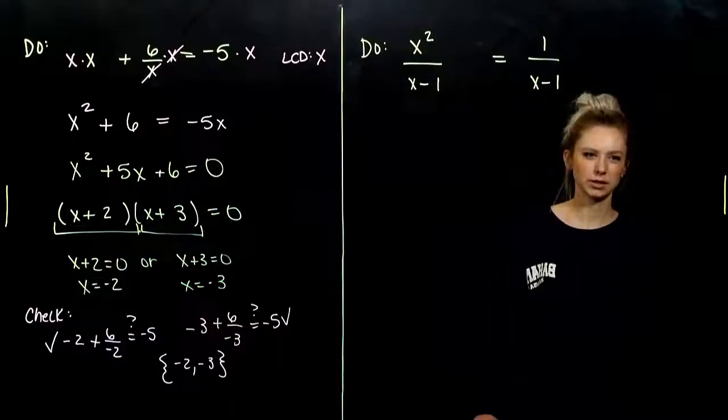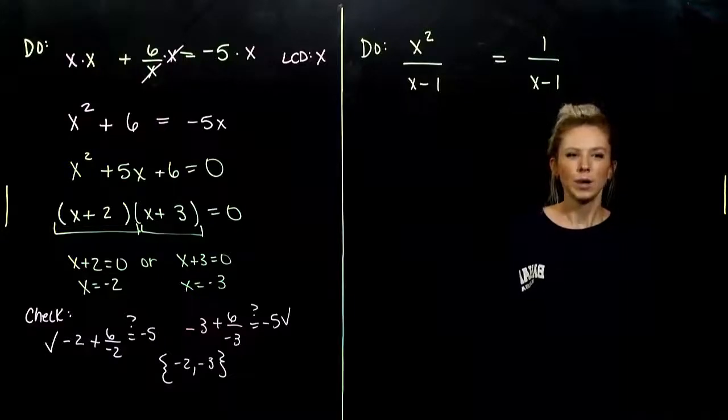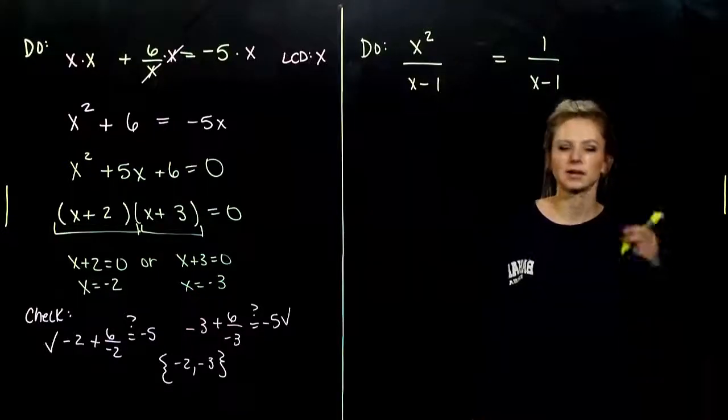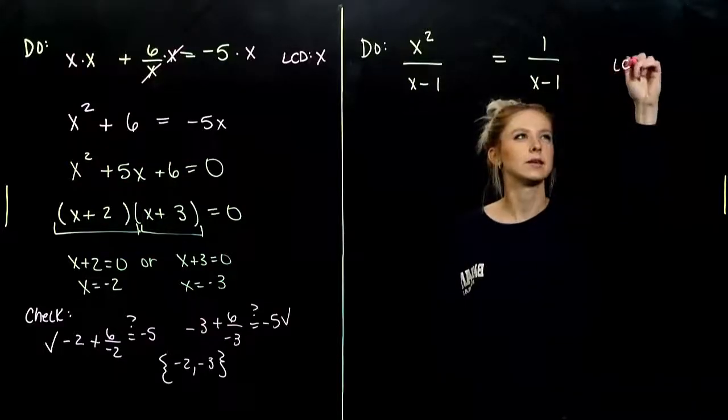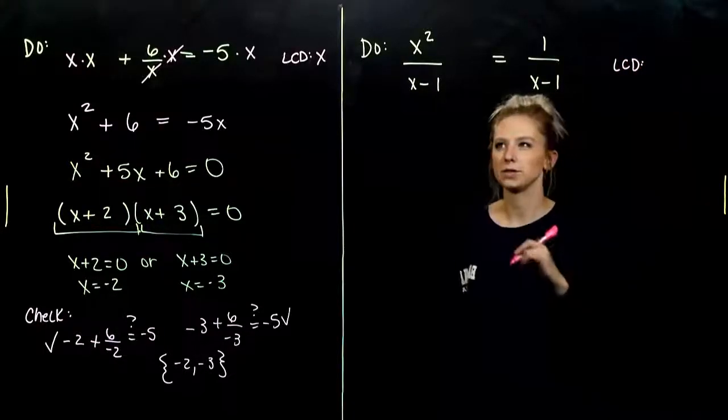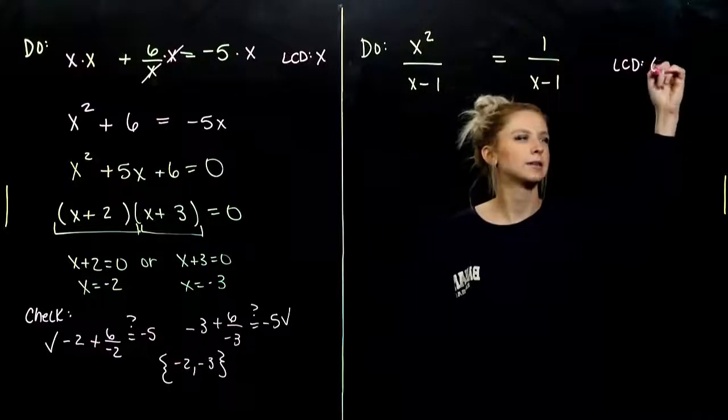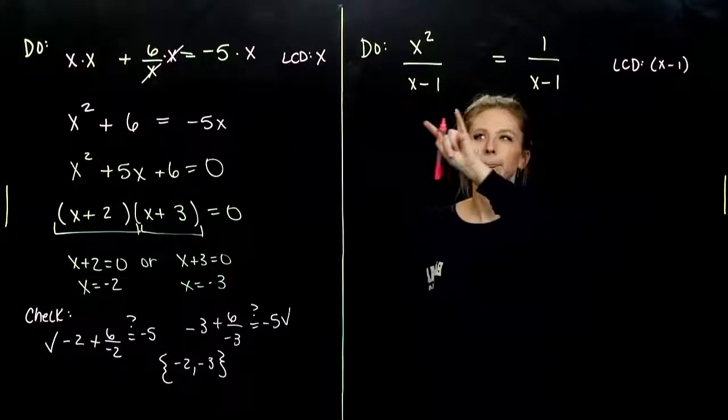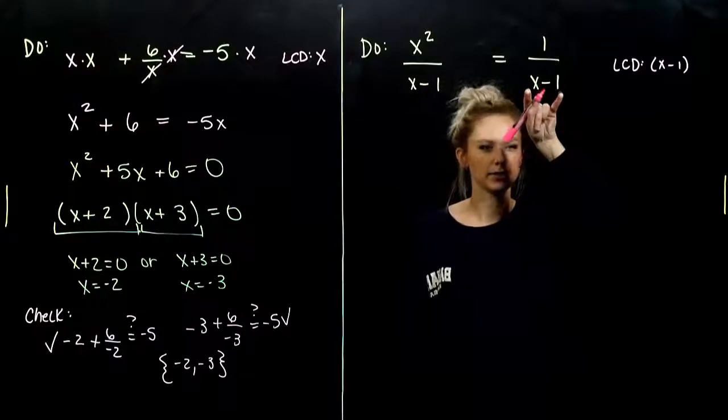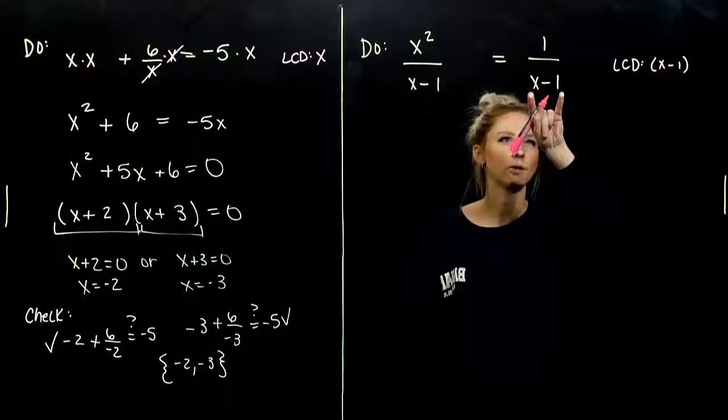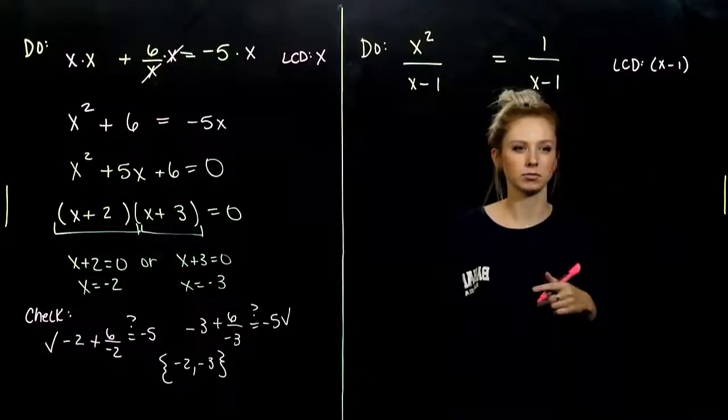So, let's take a look at this one. Again, what is my LCD in this case? Because we need to multiply everything by the LCD to clear out the fractions. So, if I start with x minus one over here, what is my LCD missing now that this one has? Nothing. I've already taken into account one factor of x minus one.